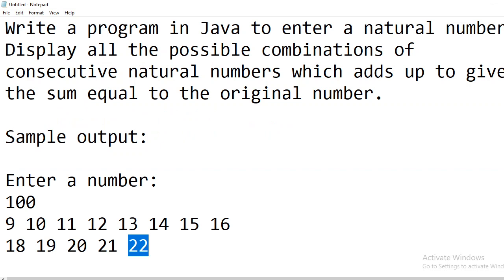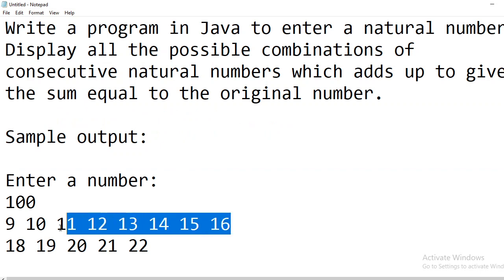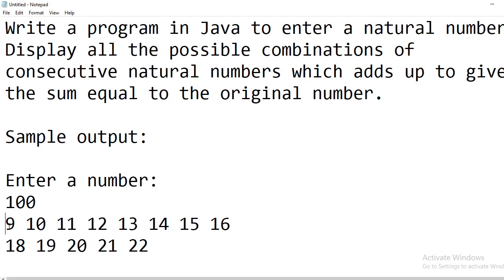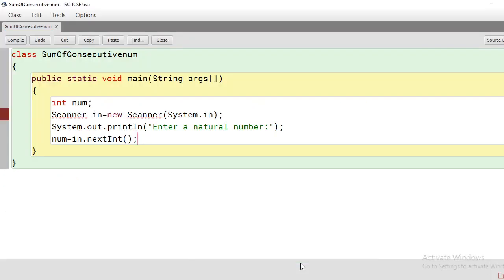What the program expects is to find combinations of consecutive numbers that add up to the original number. A combination can start from 1, or from 2, or from 3 — somewhere adding consecutive numbers will give that sum. We need to test all possible combinations, checking whether each adds up to give the sum equal to the original number.